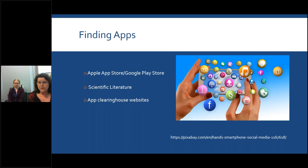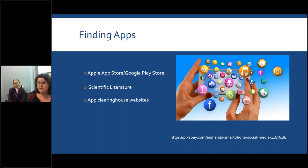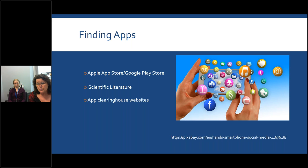A few different places you can look to find apps. The easiest ones are the Apple App Store or the Google Play Store — they're easy to use and understand. But you still need to determine for yourself whether they are based on evidence, whether they're accurate, or whether the app is valid. Another place is the scientific literature. I did a quick search in PubMed and found a recent article on asthma and allergy mobile apps, a scoping review for mental health apps, and a systematic review on apps in pain management. You can also find apps using an app clearinghouse.